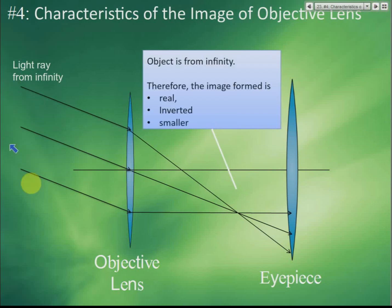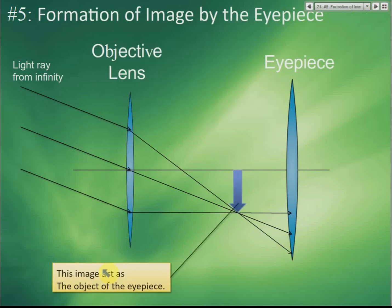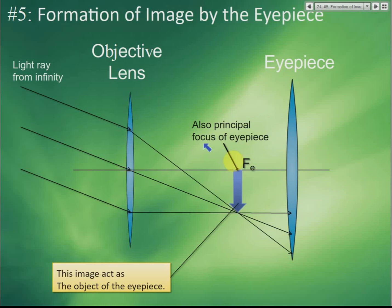Since the object is from infinity, the image formed by the objective lens is real, inverted, and smaller — the object is beyond 2f, so the image falls inside 2f. This image acts as the object for the eyepiece. We place the eyepiece so that this image falls exactly at the principal focus of the eyepiece — which coincides with the principal focus of the objective lens.